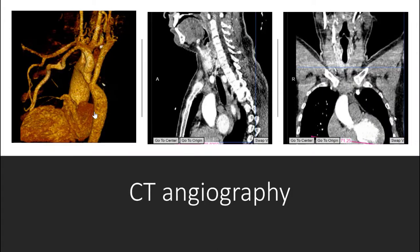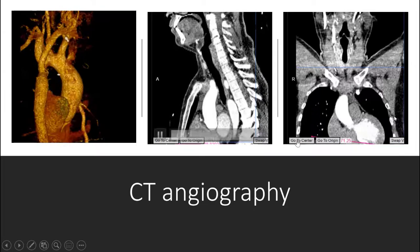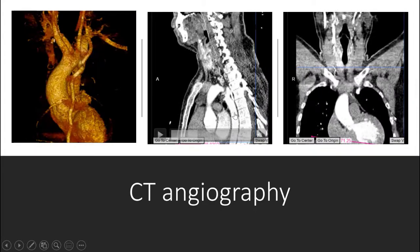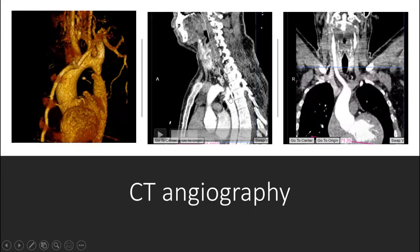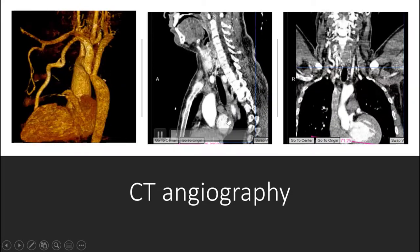CT angiography showed post-ductal aortic coarctation. You can see the coarctation after the left subclavian artery and before the insertion of the right subclavian artery. You can also see the anomalous origin of the right subclavian artery. In sagittal views, you can see here the origin of the right subclavian artery.